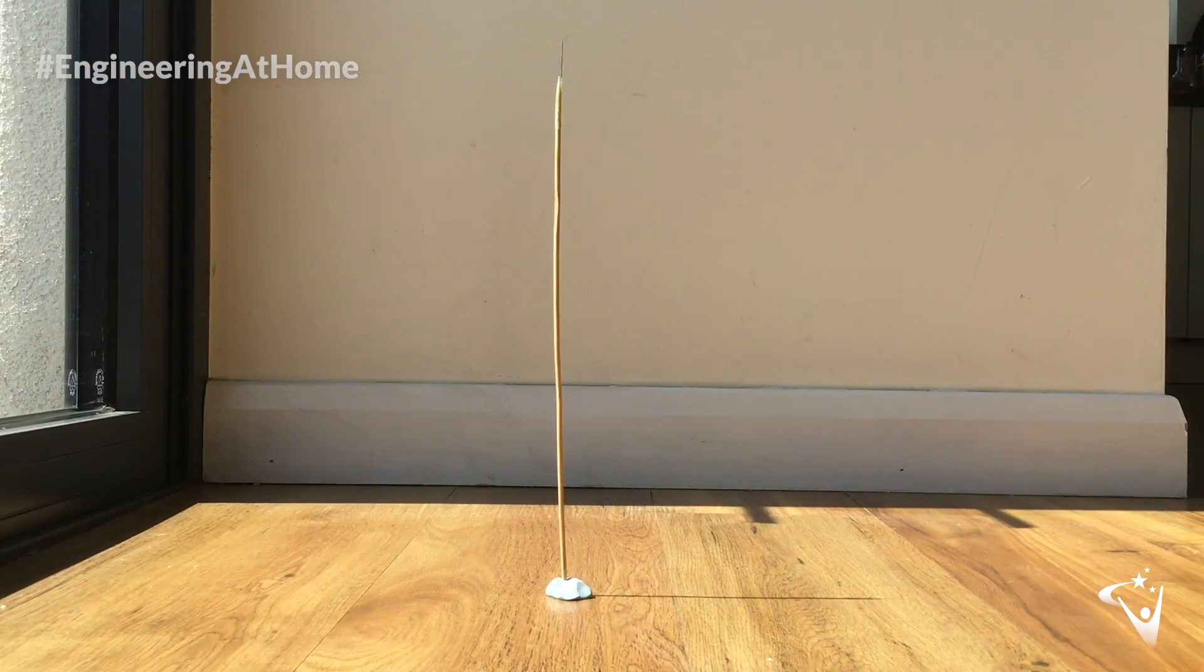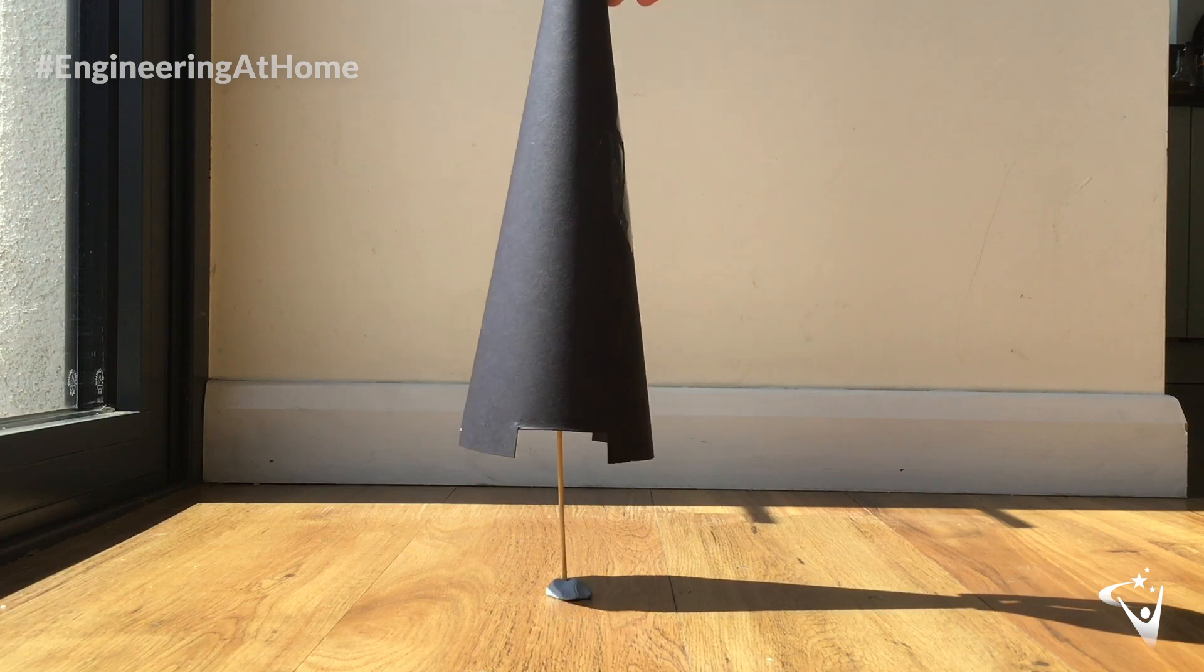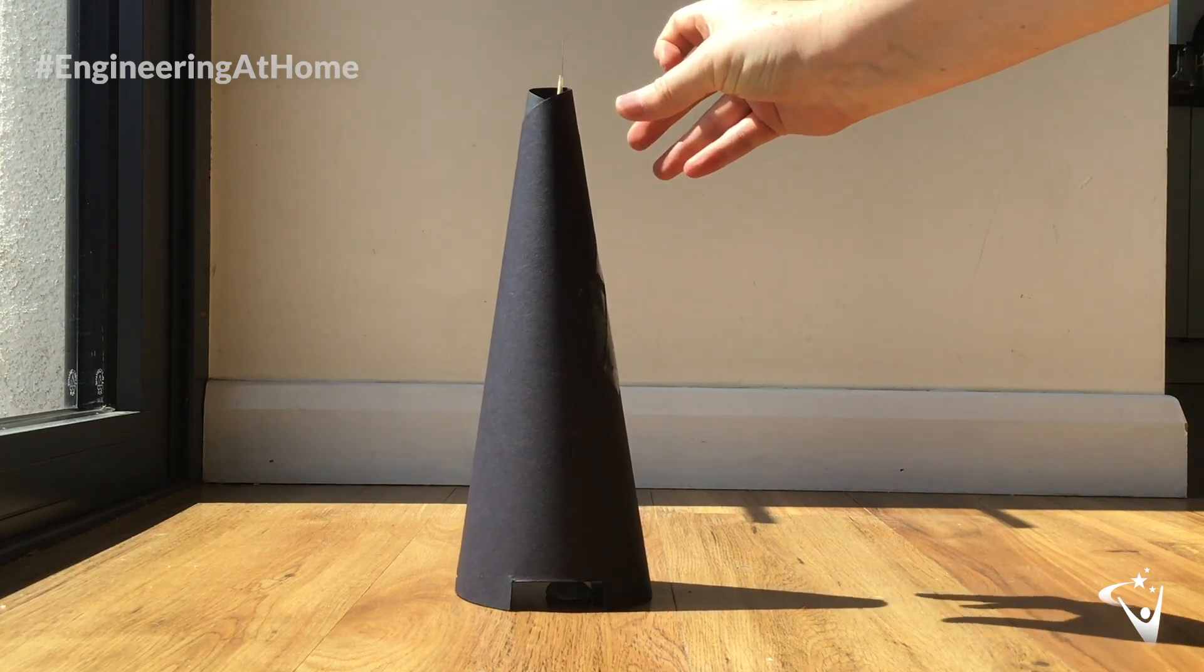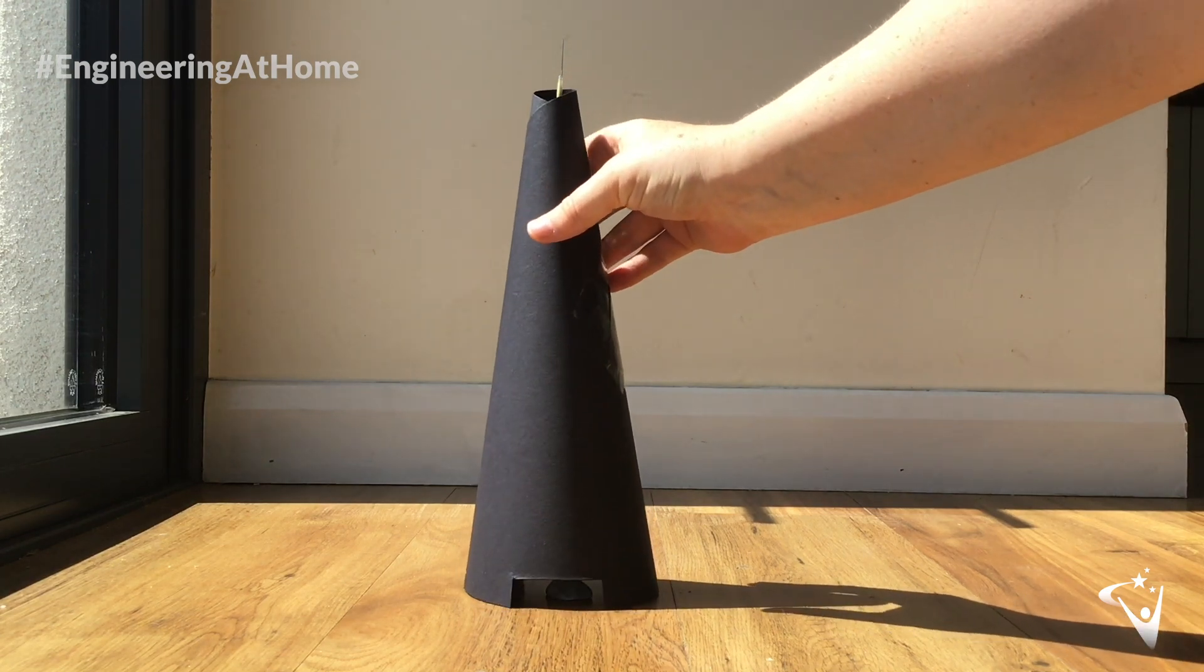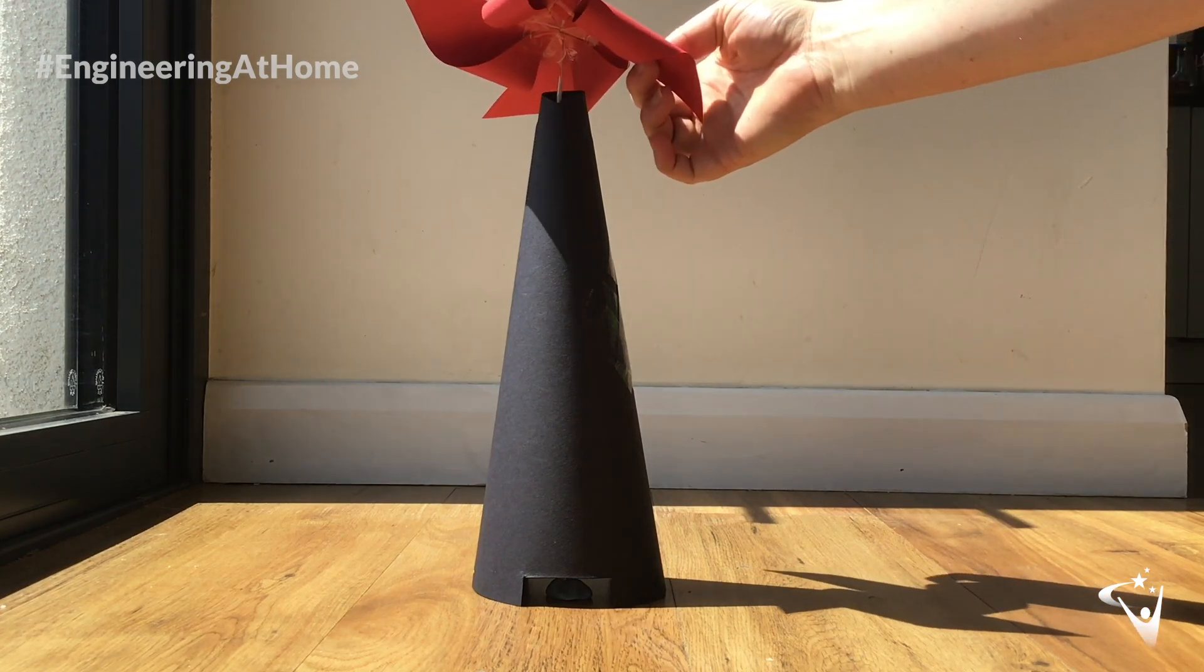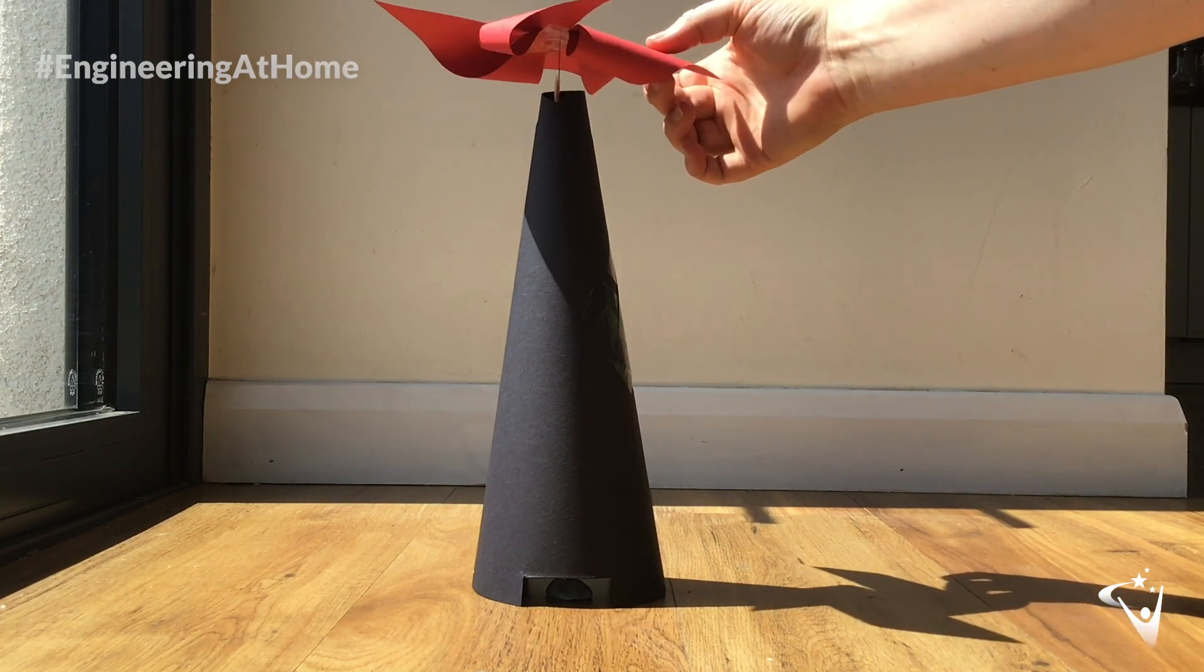Now it's time to set up your tower. As you can see I've placed the wooden skewer in the blue tack so it can stand freely. You're then just going to place your cone over it making sure it isn't leaning against it at all and then place your propeller on top of the needle. As you can see there's about five centimeter clearance at the top of the tower to allow the air to flow upwards.